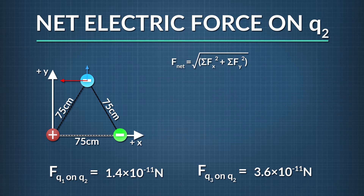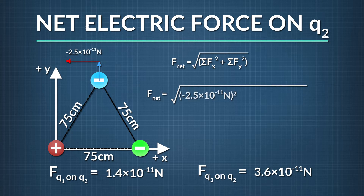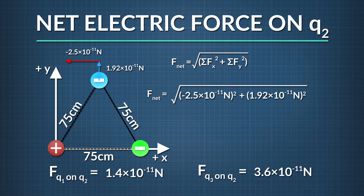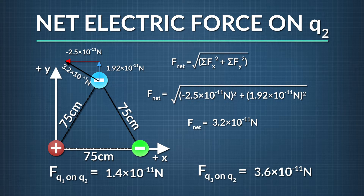Using the Pythagorean theorem, we can take the square root of the sum of the squares of these components to find the magnitude of the net force on q2. The square root of negative 2.5 times 10 to the negative eleventh newtons squared, plus 1.92 times 10 to the negative eleventh squared, equals 3.2 times 10 to the negative eleventh newtons.